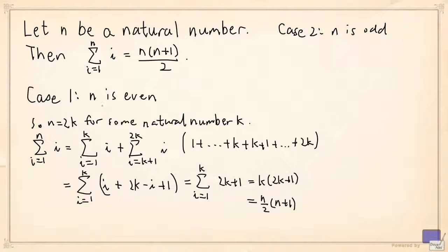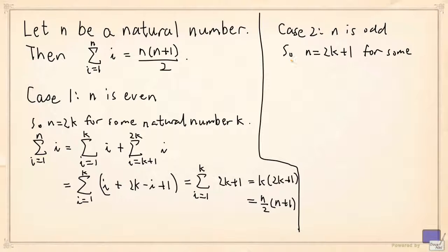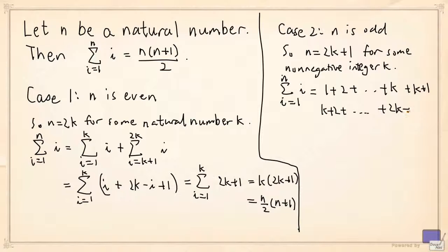So we have taken care of the case when n is even. Now what about the case when n is odd? So when n is odd, we can write n as 2 times k plus 1 for some non-negative integer k. And so the sum of i as i ranges from 1 up to n can be written as the sum from 1 up to k, and then plus k plus 1, and then plus k plus 2 plus all the way up to 2k plus 1.